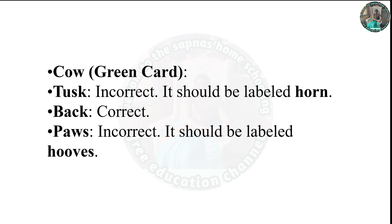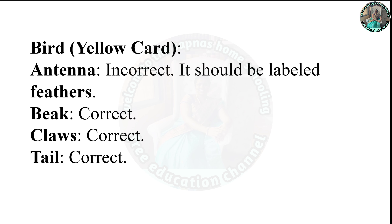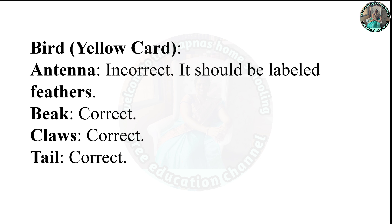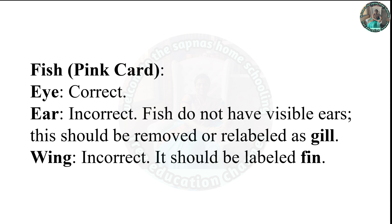It should be labeled as a horse. It should be labeled as feathers. The beak is correct. The claws are correct. The tail is correct. The fish is correct. The eye is correct. The ear is incorrect — fish do not have visible ears; this should be removed or labeled as gill. The wing is incorrect — it should be labeled as fin.